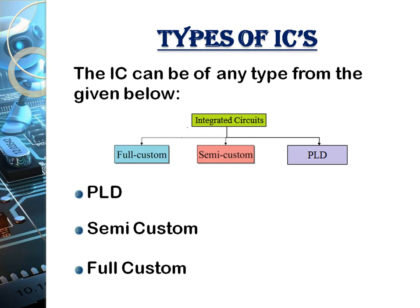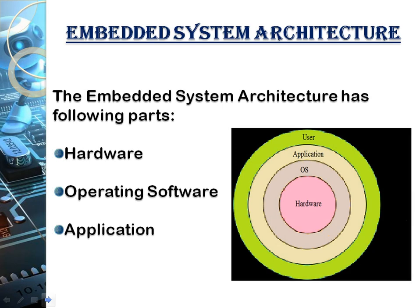ICs can be of three types: PLDs (Programmable Logic Devices), where you program all the functions yourself; semi-custom ICs, where some functions are pre-programmed and some you program yourself; and full-custom ICs, where you cannot change the code or design — you must use the IC as it is.